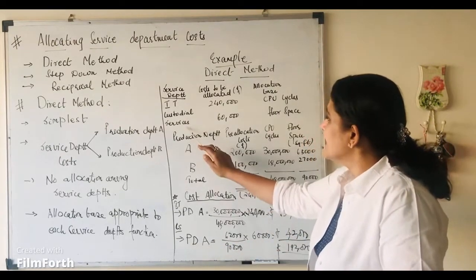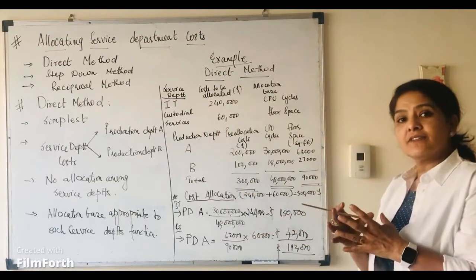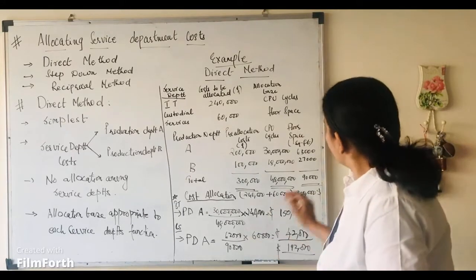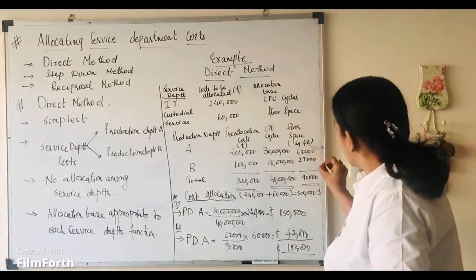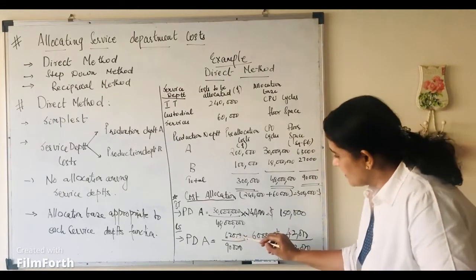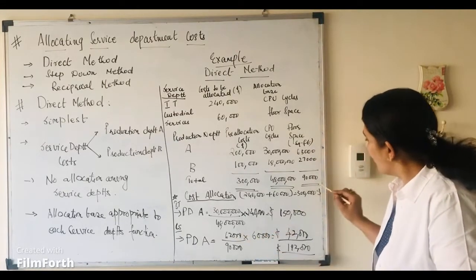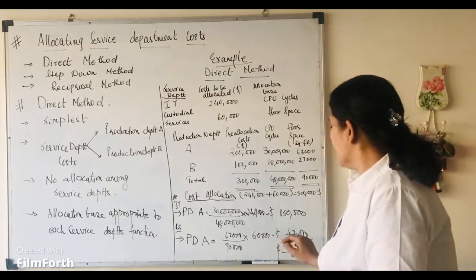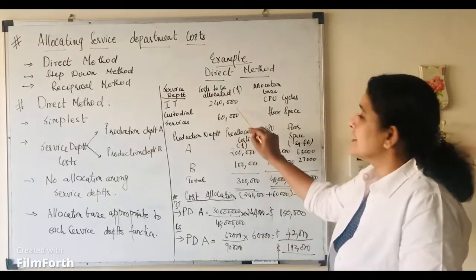Then for custodial services, how much is allocated to production department A? Now, it uses up 63,000 square feet. So, 63,000 divided by the total of 90,000 square feet gives you the proportion into the cost to be allocated which is $60,000.